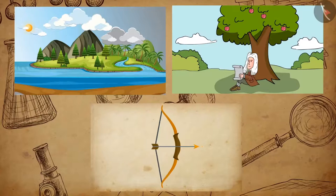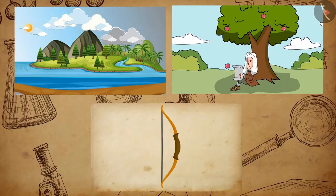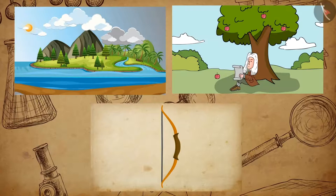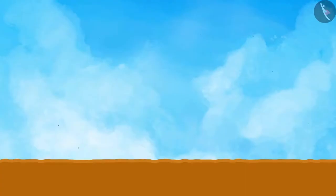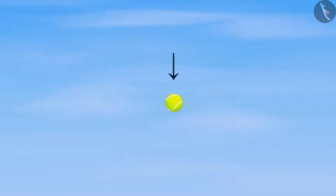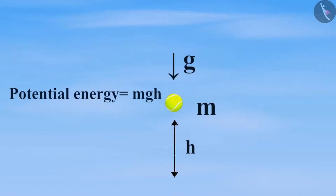The law of conservation of energy is applicable in all situations and all kinds of energy conversions. Now let us perform a simple activity to understand this law. Suppose a ball of mass m undergoes free fall from a height h. At the start of the fall, the potential energy of the ball is equal to mgh and the kinetic energy is equal to zero, because the ball has no velocity at the beginning. Thus the total energy of the ball is mgh.